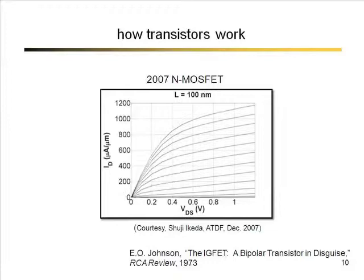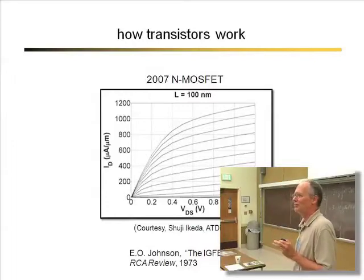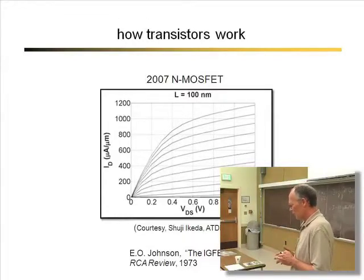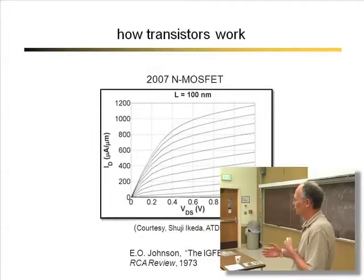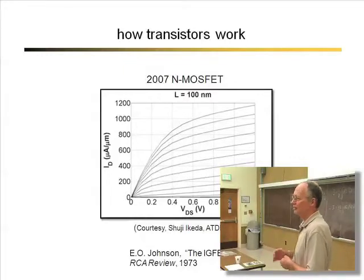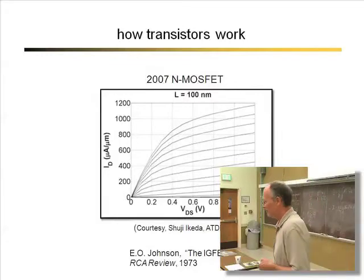These are the IV characteristics of a MOSFET in 2007 with a drawn channel length of about 100 nanometers and a physical channel length a little shorter. These are typical IV characteristics you'll see for transistors. A useful way to understand these small devices was first introduced by Ed Johnson in 1973. If you take courses, you'll see two main types of transistors — bipolar transistors and MOS. For many years there was a competition between these two technologies, but as devices got denser MOSFETs have taken over. What Johnson pointed out is that they're really the same kind of device operating by the same physical mechanisms.